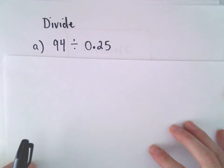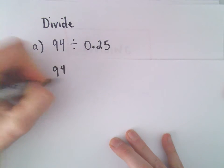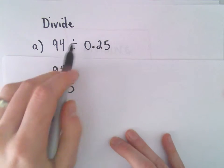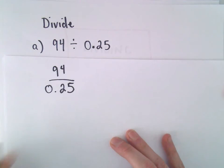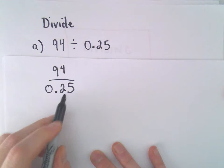To start off, we can write 94 divided by 0.25 using a division bar instead of the division sign. What we're going to do is get rid of the decimal place in the denominator.